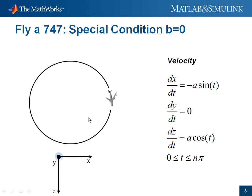We're looking at the aircraft from above. The y-axis is pointing towards us, the z-axis is pointing downwards, and the x-axis is pointing to the right.